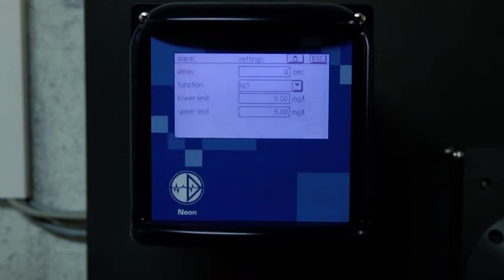A delay time can be set for the alarm relay. In that case, the alarm relay switches only if the event lasted longer than the delay time. On the display, the event is indicated immediately.